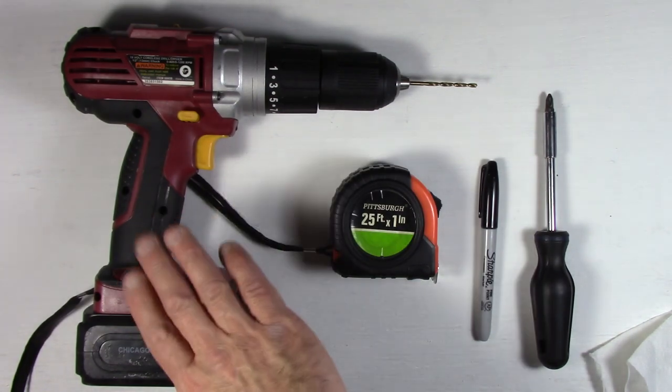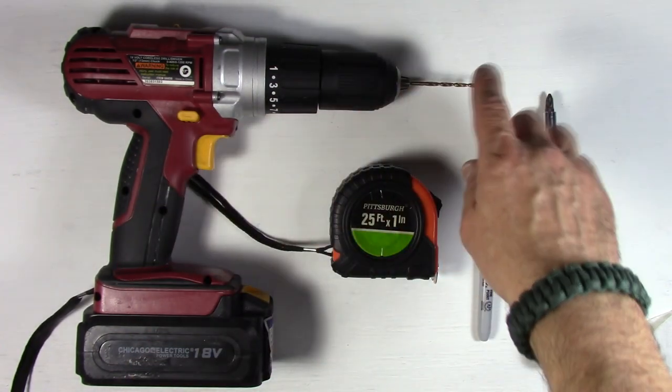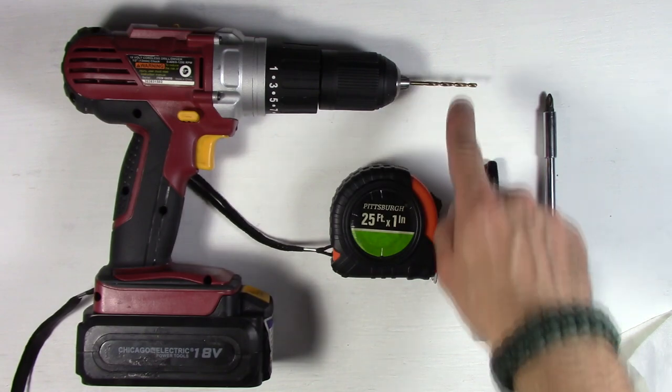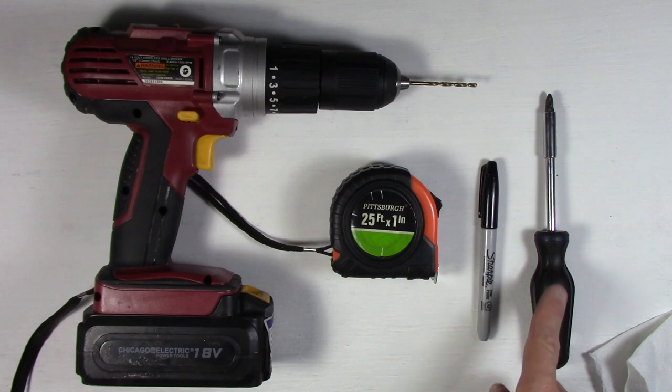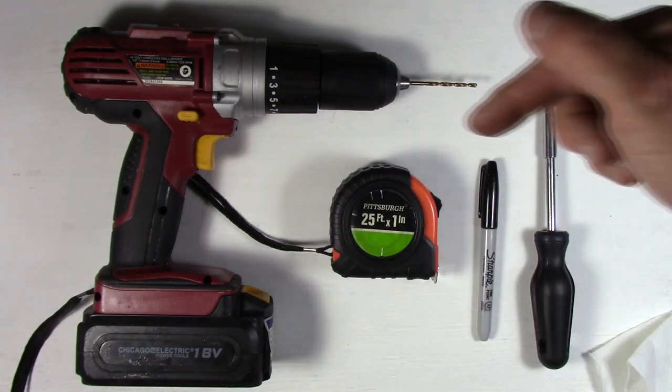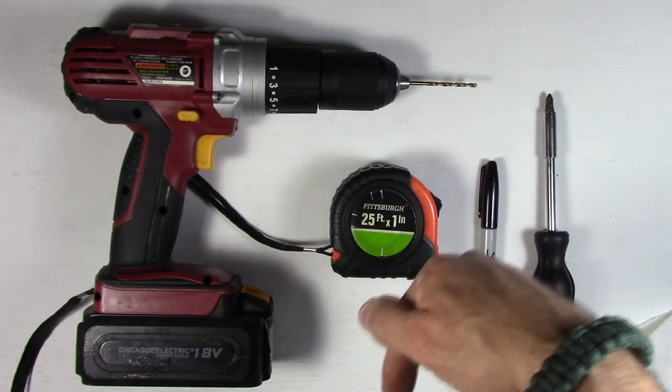Here are all the tools I used on this job. I've got a cordless drill, a one-eighth inch drill bit, a tape measure, a marker, and a number two Phillips screwdriver. I will have a link to all this stuff at Amazon in the video description below.